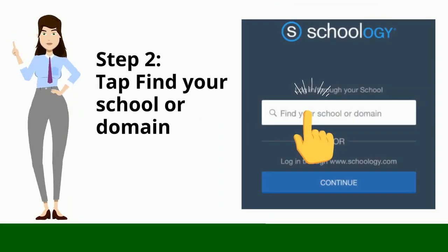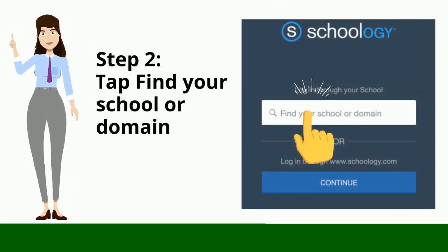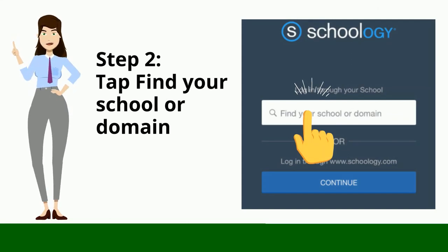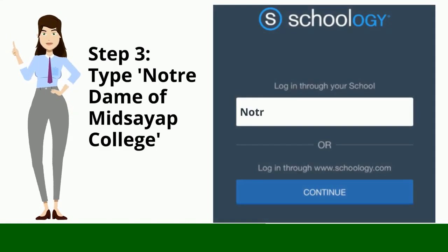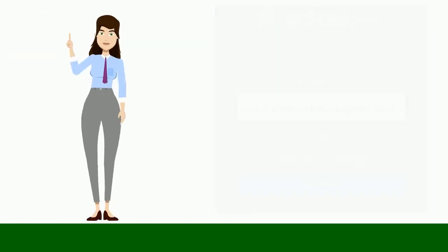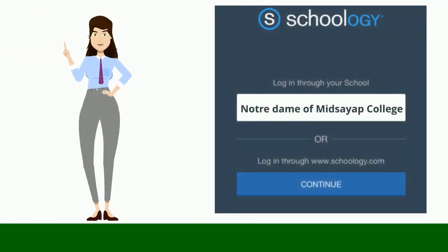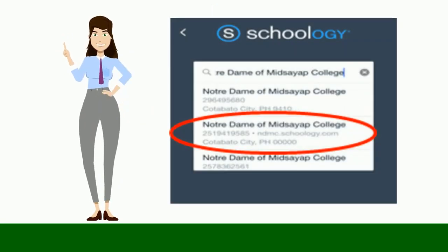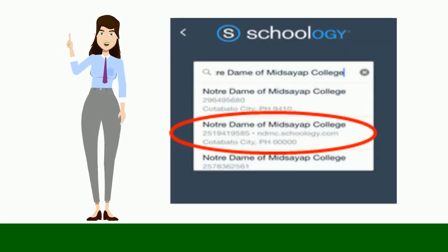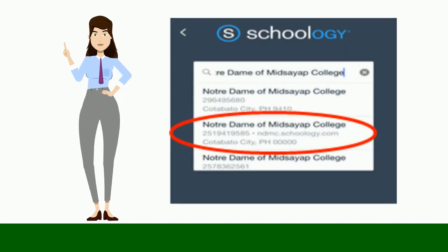Tap Find Your School or Domain to log in through your school or district. If you choose this option, skip to Step 3. Type Notre Dame of Mid-Sayip College. Once you type NBMC, you will be provided with three options. Choose the second one, having the website nbmc.schoology.com.